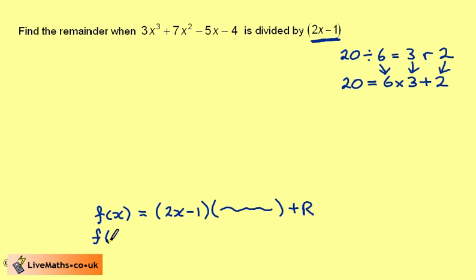And if we evaluate f of a half, we get 2 times a half, take away 1, times the quotient, add the remainder. This is 1 take away 1, which is 0, and therefore we just get left with the remainder.